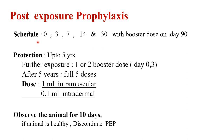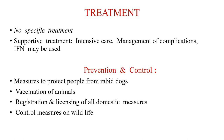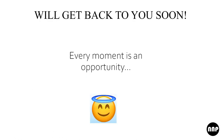PEP schedule: days 0, 3, 7, 14 and 30, with a booster dose on day 90. This provides protection for up to five years. If further exposure occurs within five years, one or two booster doses on days 0 and 3 suffice. After five years, the full five-dose schedule is needed. Dose is 1 ml intramuscular or 0.1 ml intradermal. Importantly, rabies vaccine must never be given in the gluteal region — high fat content there slows absorption, potentially leading to vaccine failure and a medico-legal case. Observe the animal for 10 days; discontinue PEP if it remains healthy.